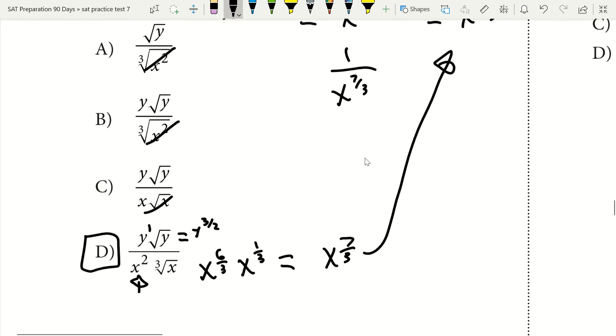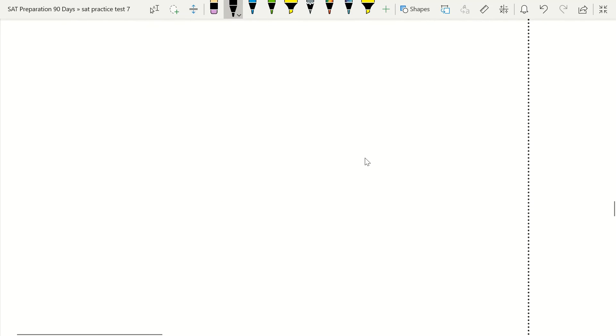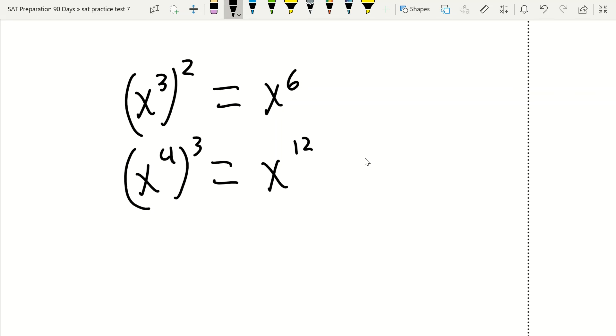Now one thing I want to add here is just that if you were to multiply something with the same base, let's say that we had x to the third power, and we're not multiplying here, we're actually raising to a power. And let's say we're raising that to the second power. You're just going to multiply those two, so then you would end up with x to the six. Let's say we have x to the fourth power and we raised it to the third power. Then you're going to end up with x to the twelfth. So that's just one thing to note here as far as explaining the rules with exponents with the same base.